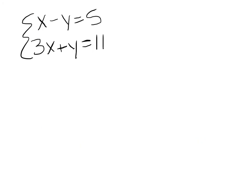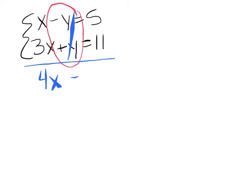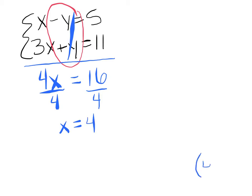Here's another system. It's already lined up in standard form, so we can start by looking for opposites. I have x and 3x, and I have negative y and positive y. The y's are opposites! Because I have opposites, I can solve using elimination — just combine the two. x and 3x is 4x. Negative y and positive y cancel to nothing. On the other side, 5 and 11 is 16. I need to divide both sides by 4, and I get x equals 4. That's the first half of our solution.